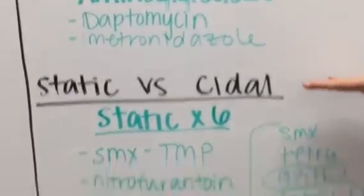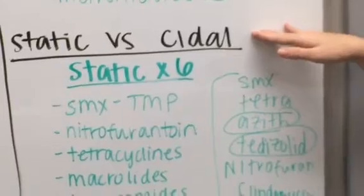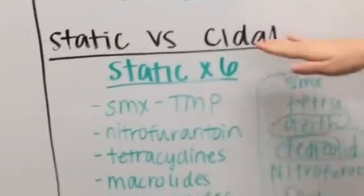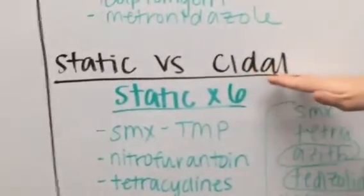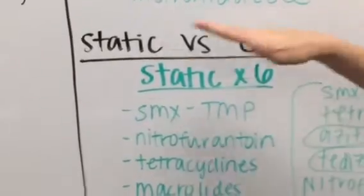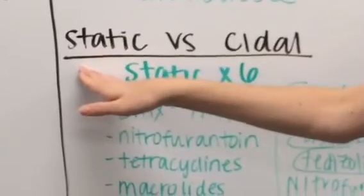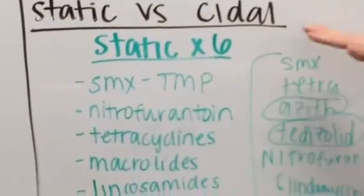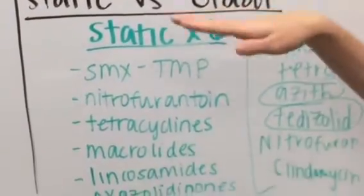Then we have something called static versus cidal, and this is just going to be whether or not we're actually killing the bacteria versus just inhibiting the future growth of the bacteria. So that's the difference between cidal versus static.